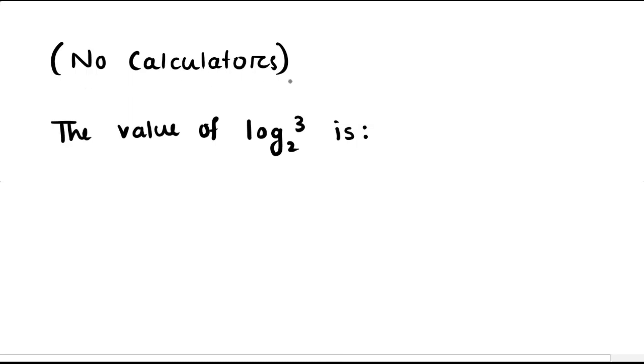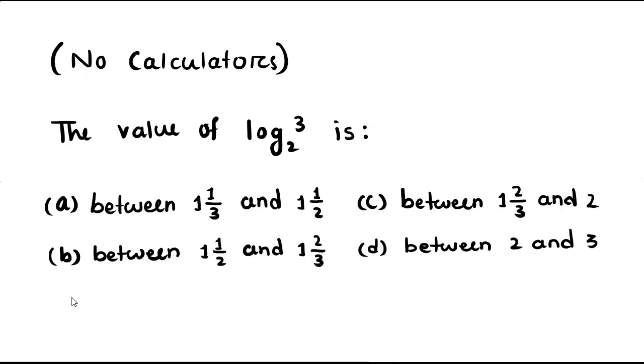Here I got a no calculator question. You have to calculate the value of logarithm of 3 to the base of 2. Which of the following options? Option A: between 1 and 1/3 and 1 and 1/2. Option B: between 1 and 1/2 and 1 and 2/3. Option C: between 1 and 2/3 and 2, or Option D: between 2 and 3.